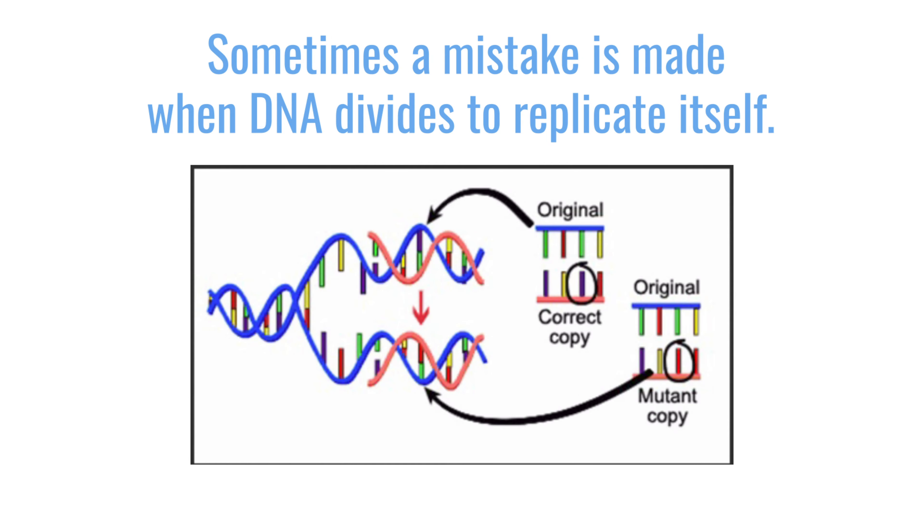Every once in a while, as it's copying all of those bases of DNA, it makes mistakes. Most of those mistakes we never know about. But every once in a while, a mistake occurs in a gene in which one of those bases, one of those coding segments, gets altered. And if it gets altered in a gene that causes cells to more rapidly divide, that's a mutation we want to know about.